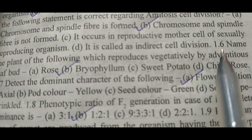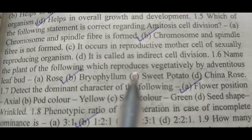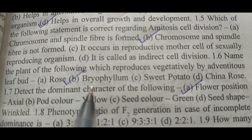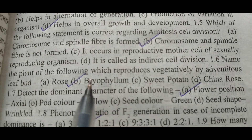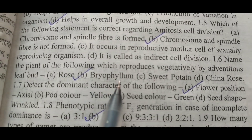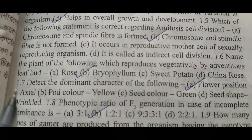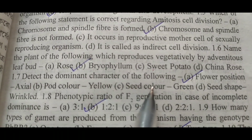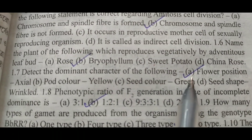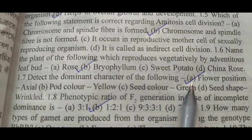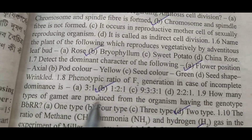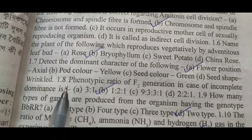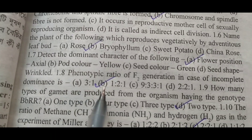Next, 1.6: Right answer will be B — Bryophyllum. Next, 1.7: Detect the dominant character of the following. Right answer A. Next, question 1.8: Right answer will be B — 1 is to 2 is to 1.